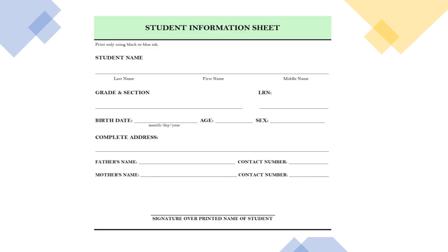Another student information sheet for practice — this one will be very personal. Write your last name, your first name, and your middle name, your grade and section, your LRN or learner's reference number, your birth date, your age, your sex, and your complete address, your father's name, mother's name, and their contact number. Please do not forget to affix your signature over your printed name.